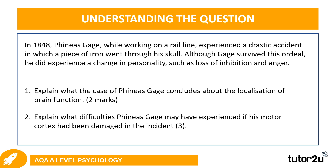Now another question. In 1848, Phineas Gage, while working on a rail line, experienced a drastic accident in which a piece of iron went through his skull. Although Gage survived, he did experience a change in personality, such as a loss of inhibition and anger. You have two questions to attempt. First, explain what the case of Phineas Gage concludes about the localisation of brain function — two marks available. Second, explain what difficulties Phineas Gage may have experienced if his motor cortex had been damaged in the incident — three marks available. Pause the video, have a go, then press play to check your answers.